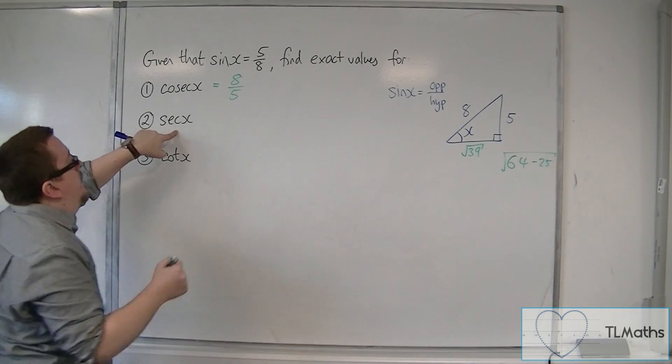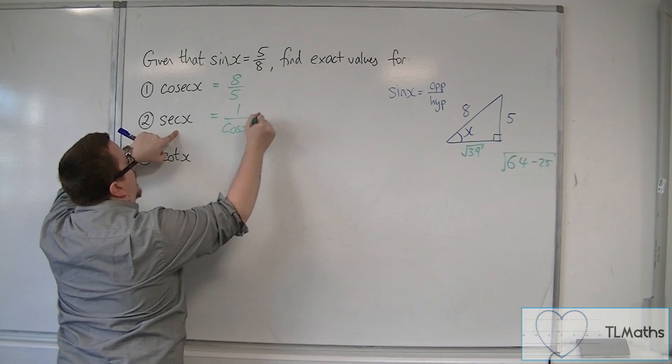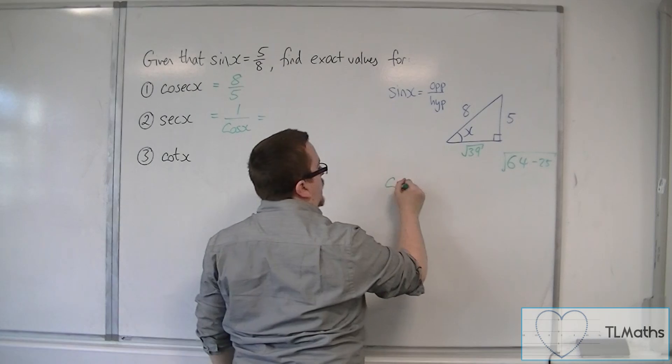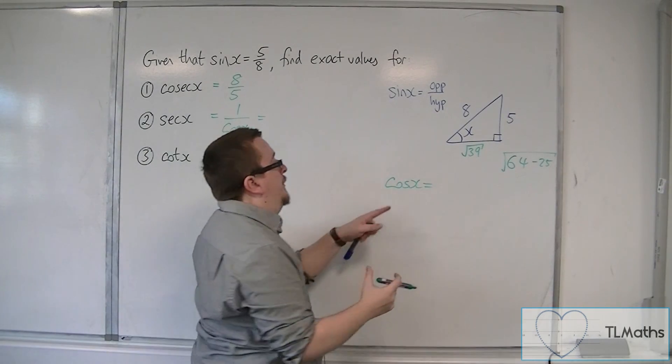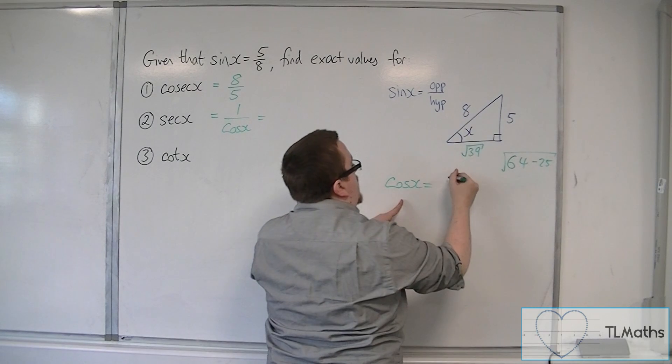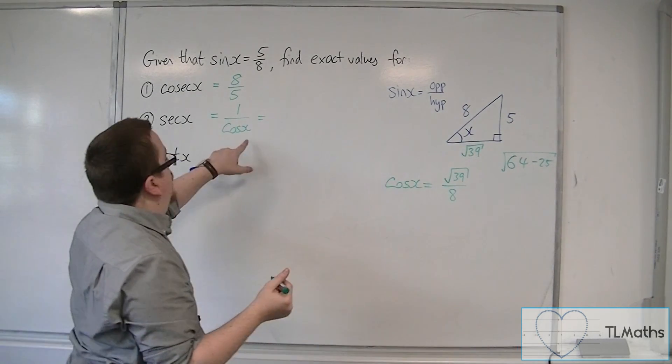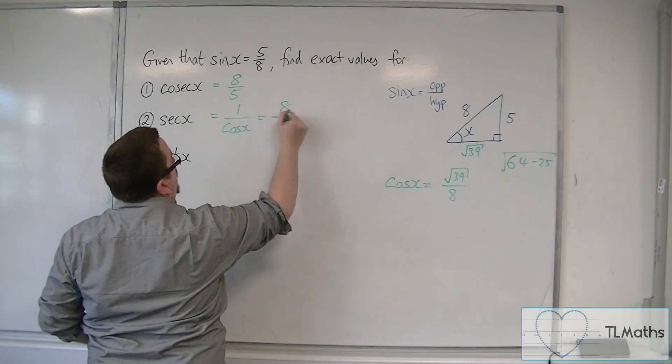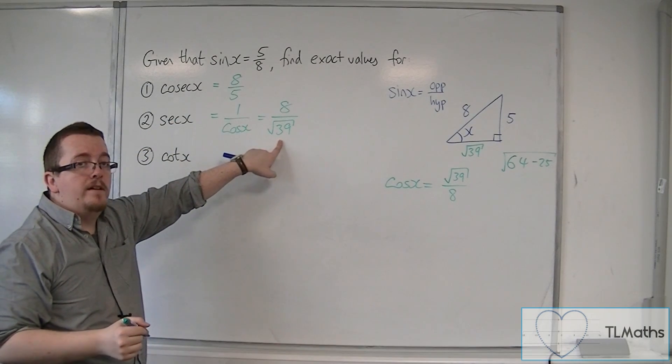Sec is 1 over cos. Now cos is adjacent over hypotenuse, so that's root 39 over 8. And so 1 over that is 8 over root 39, so sec x is 8 over root 39.